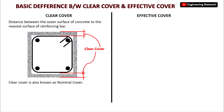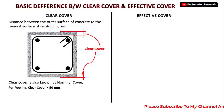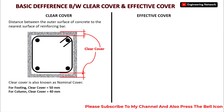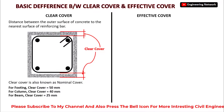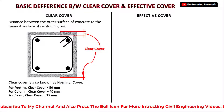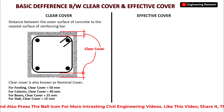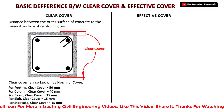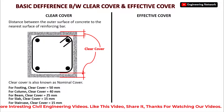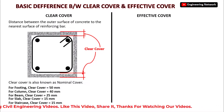There are different values of clear cover for different structural members. For footing, the clear cover is 50 mm. For column, the clear cover is 40 mm. For beam, the clear cover is 25 mm. For slab, the clear cover is 15 mm. And for staircase, the clear cover is also 15 mm.